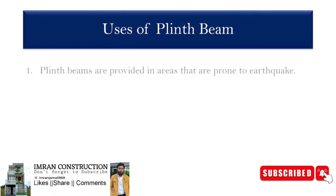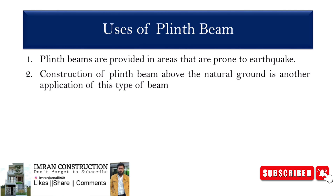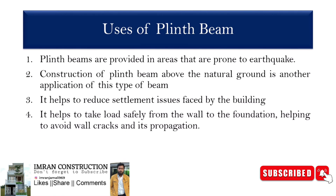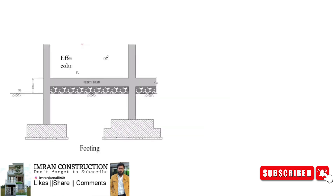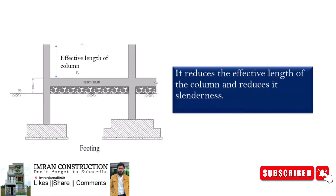Uses of plinth beam: Plinth beams are provided in areas that are more prone to earthquake. In seismic regions, plinth beam acts as a connecting band, a continuous band that can help to improve the strength of the building in dynamic loads. The construction of plinth beam above the natural ground is another application of these type of beams. It also helps to reduce the settlement issues faced by buildings, and settlement issues that can result in wall cracks and their propagation are also resisted. The use of plinth beam reduces the effective length of the column, meaning it reduces the slenderness of the column, which can further prevent the buckling issues faced by columns under unexpected loading conditions.